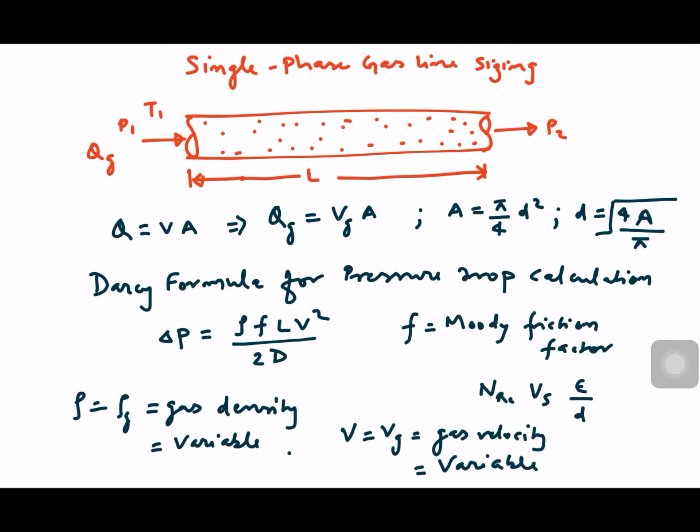Let's say we have a pipeline of length L, inlet pressure P1, outlet pressure P2, inlet temperature T1, and inlet gas flow rate Qg. In previous videos I have explained line sizing for liquid lines. There we use a simple formula: Q = AV. From that formula we can calculate the velocity of the fluid for the given volumetric flow rate Q in cubic meters per second, using the assumed diameter to calculate the cross-sectional area of the pipeline.